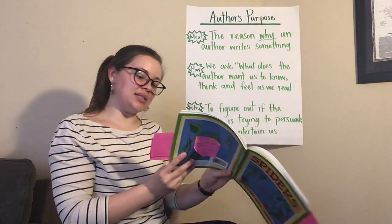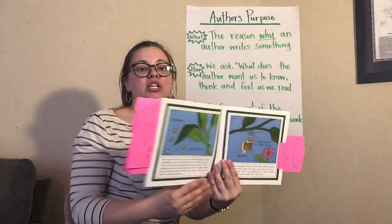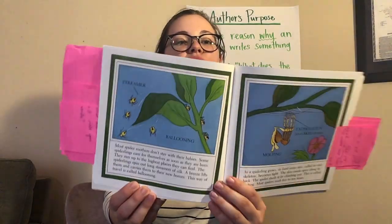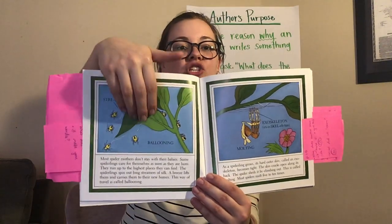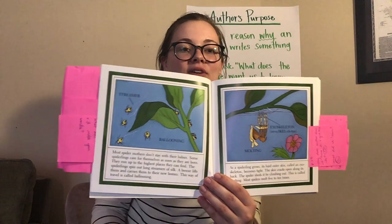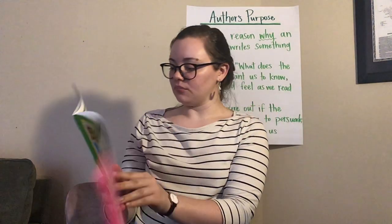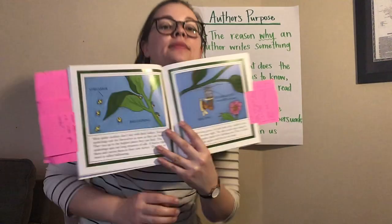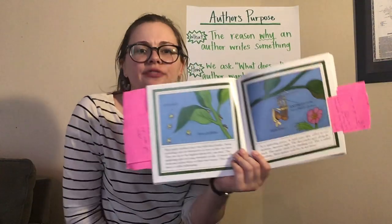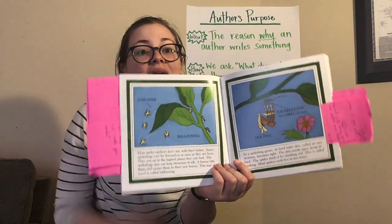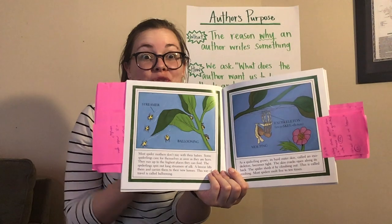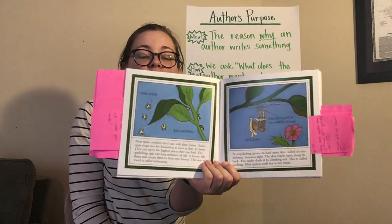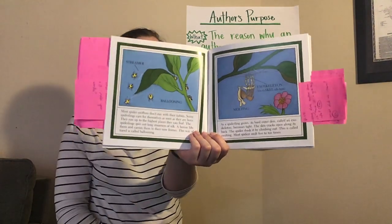I'm thinking about why the author shows us these illustrations and gives us this information. What have you learned so far? I know that I've learned that male spiders are smaller than female spiders. What's something that you have learned so far from our informational text?